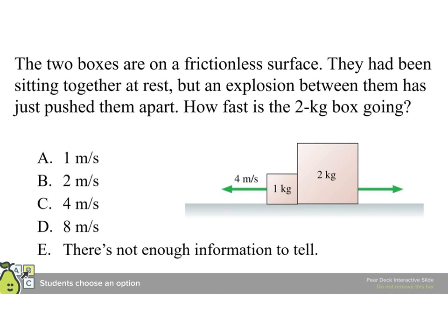Two boxes are on a frictionless surface. They had been sitting together at rest, but an explosion between them, that's a lot of explosions in this chapter, has just pushed them apart. How fast is the two kilogram box going? And this is going to be as simple as zero at the start is minus four meters per second times one kilogram plus two kilograms times the final speed. So, we'll get the final speed would be two.